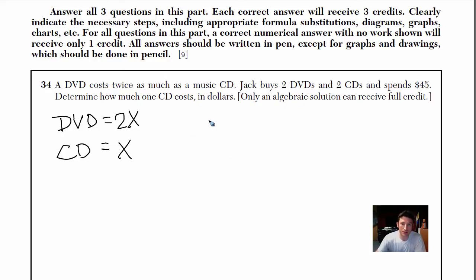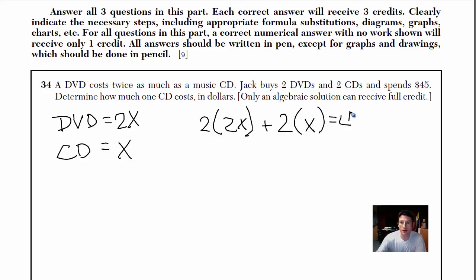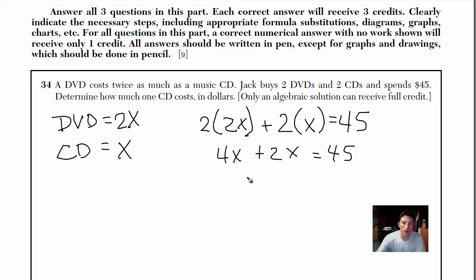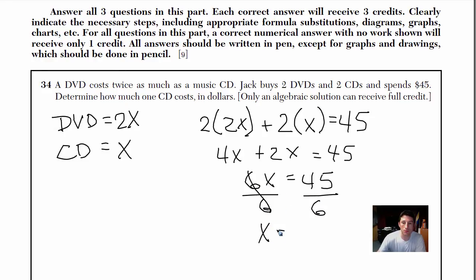Now let's write our equation. Jack buys two DVDs at a price of 2X, plus two CDs at a price of X, and all added up we're going to spend $45. Let's simplify: 2 times 2 gives us 4X plus 2X equals 45. We've got 6X equals 45, divide by 6.